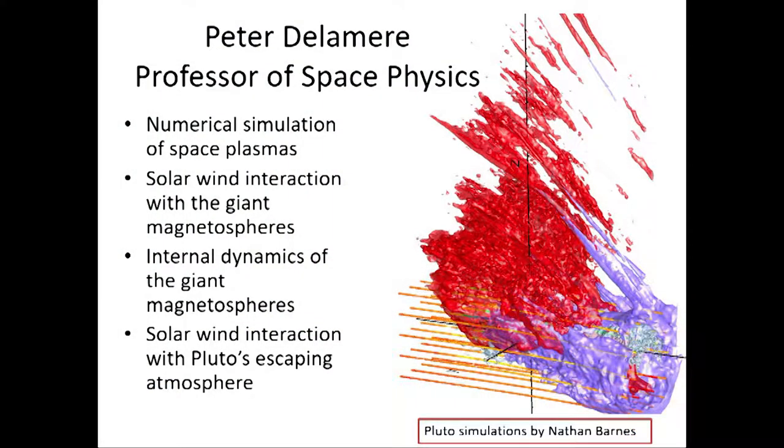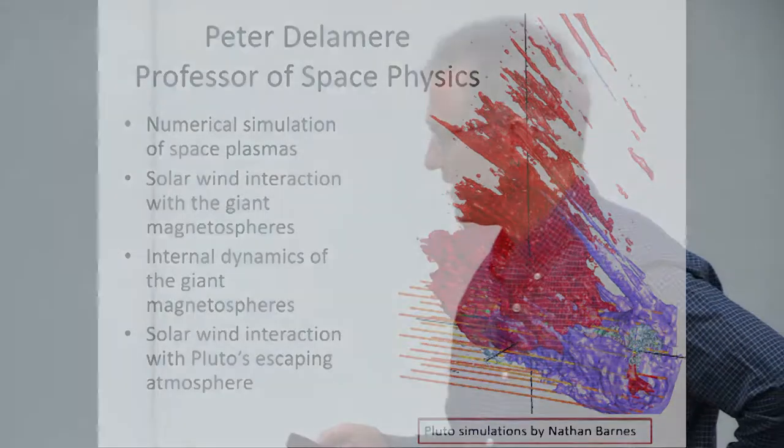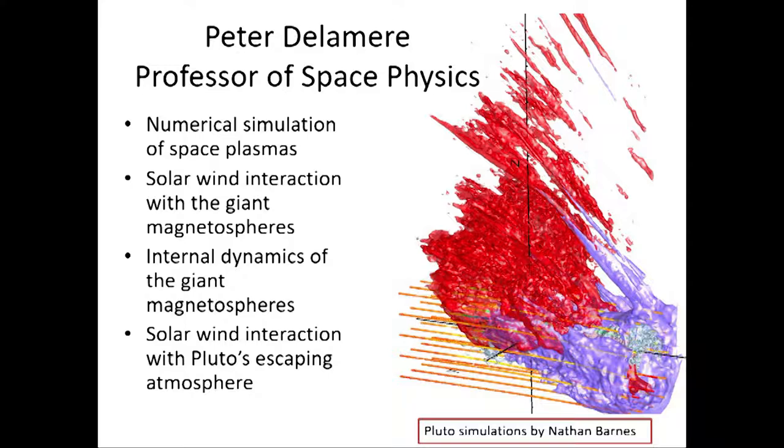I am a professor of space physics with a joint appointment at the UAF Physics Department and the Geophysical Institute. One of my specialties is the numerical simulation of what we call space plasmas — computer simulations where we solve mathematical equations, make predictions, and compare with data. Most of the data I look at is from NASA missions: flagship missions to Jupiter and Saturn, and also to Pluto. This is a computer simulation of the solar wind interaction with Pluto's escaping atmosphere, produced over the weekend. It was done by one of our UAF graduate students, Nathan Barnes.